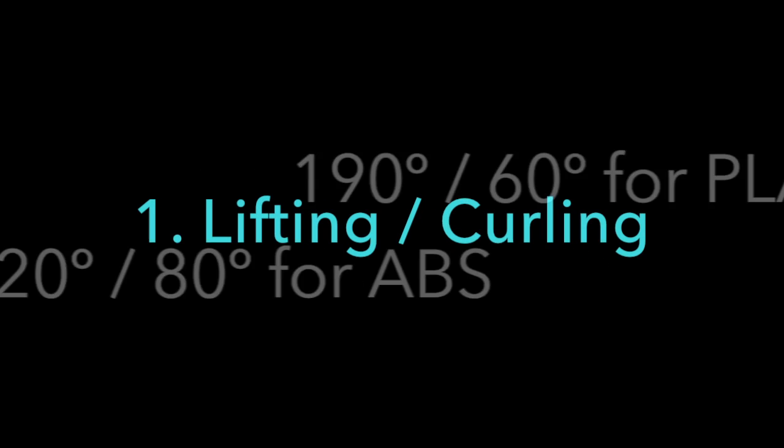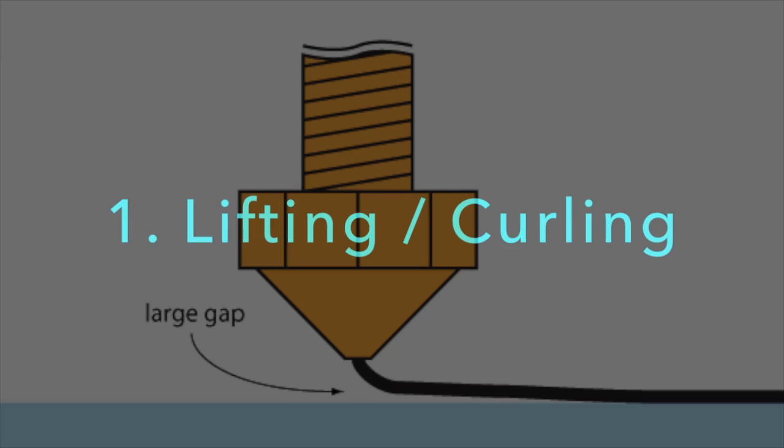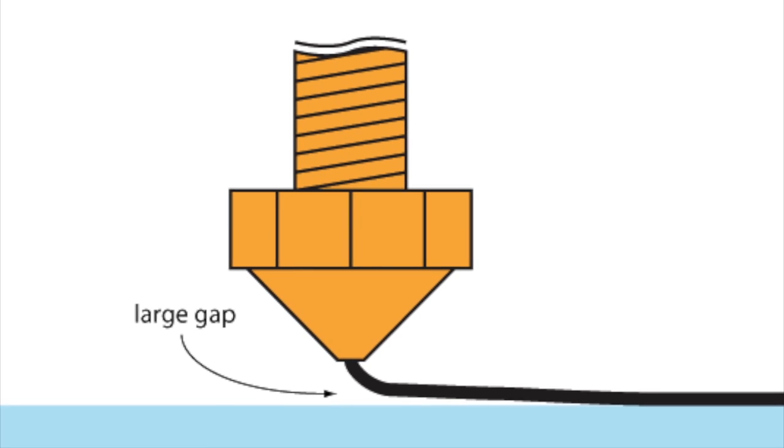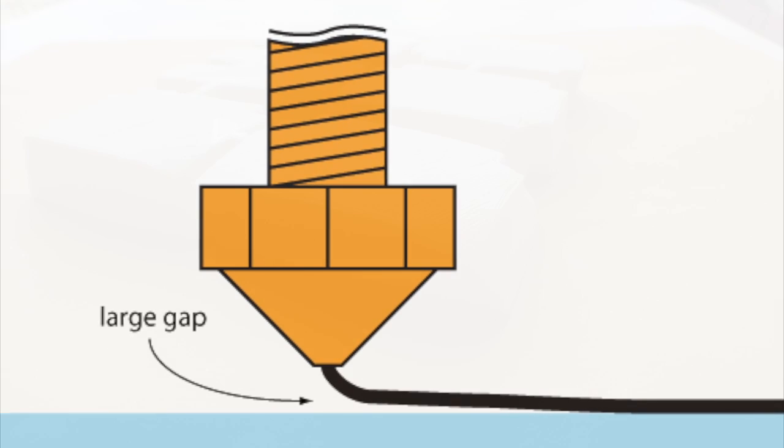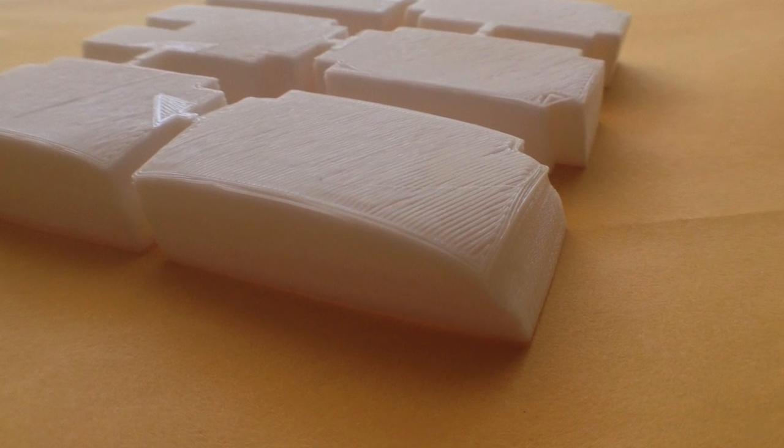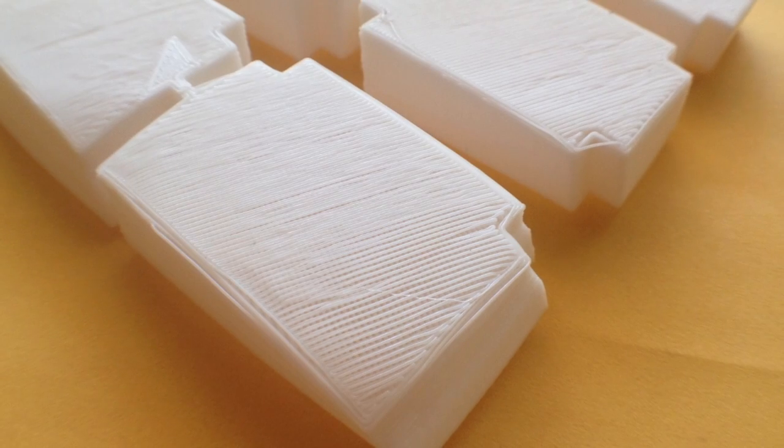Assuming the nozzle and bed temps are correct for the filament that you're using, let's start with the problem of lifting or curling. The most likely reason is that your nozzle is too far from the bed or that your bed is out of level which causes your nozzle to lift as it travels. The resulting failure will look something like this. Notice the gaps between the filament?